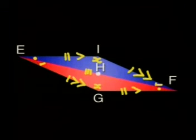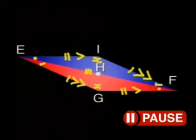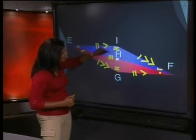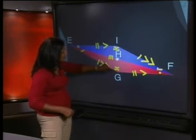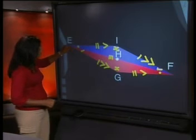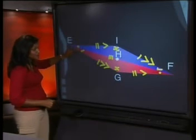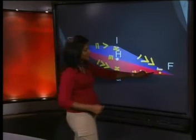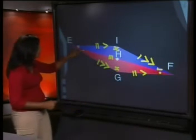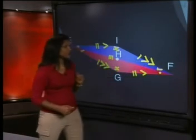Look at all the information we have on our parallelogram. Can you identify more properties? I see that the opposite angles are equal to one another. The angle at I is equal to the angle at G — they have the same markings. And the angle at E has a dot plus a tick as a marking, and the angle at F also has a dot and a tick, meaning angle E and angle F are also equal.